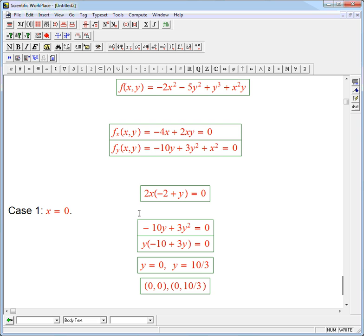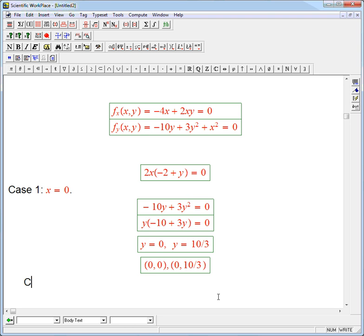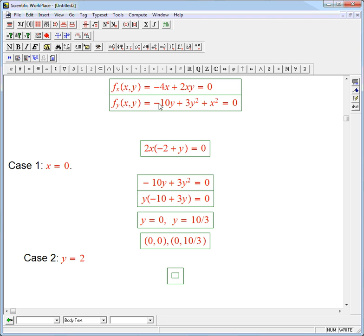But we're not done, because that wasn't the only case from the fx equation. We're going to look at case 2. What was the other case? The other way this could have been equal to 0 is y equals 2. What happens there? Well, if you put y equals 2, that's going to simplify this equation again.